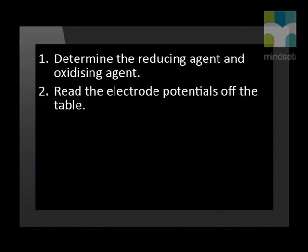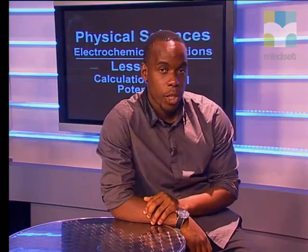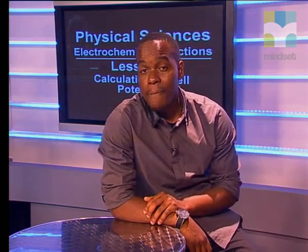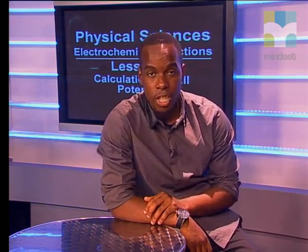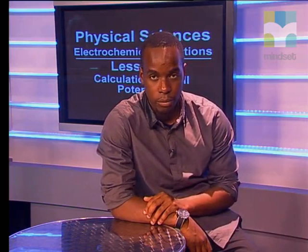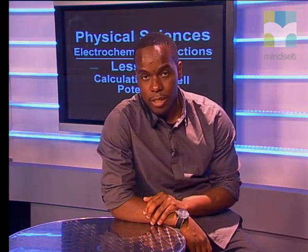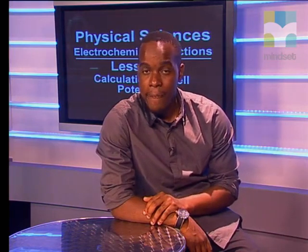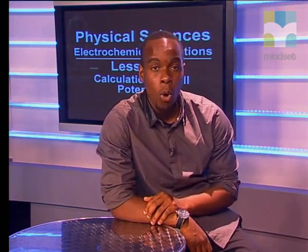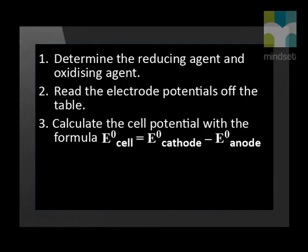Step 2: read the electrode potentials off the table of standard reduction potentials. Reduction takes place at the cathode, and the value next to the oxidizing agent is known as the E° cathode potential. Oxidation takes place at the anode, and the value next to the reducing agent is known as the E° anode potential.